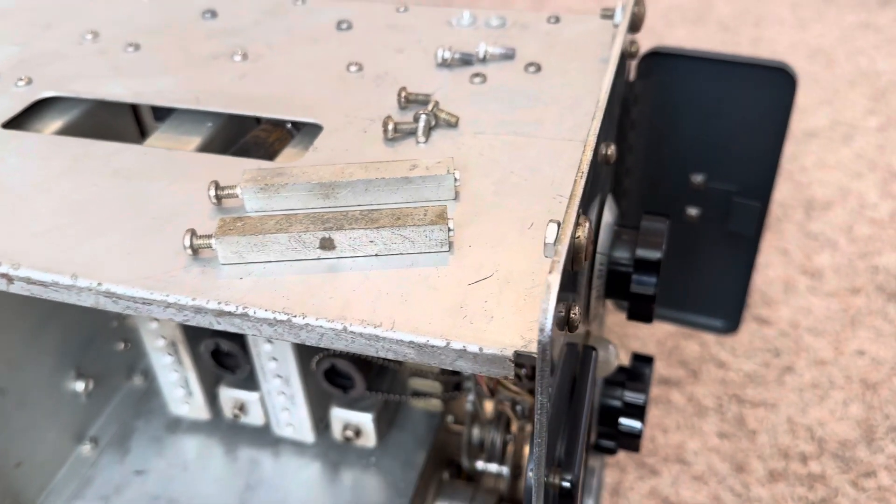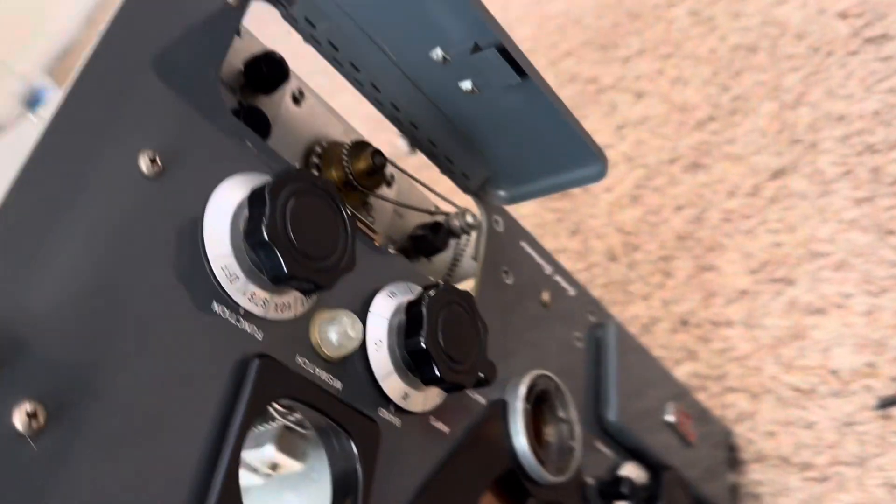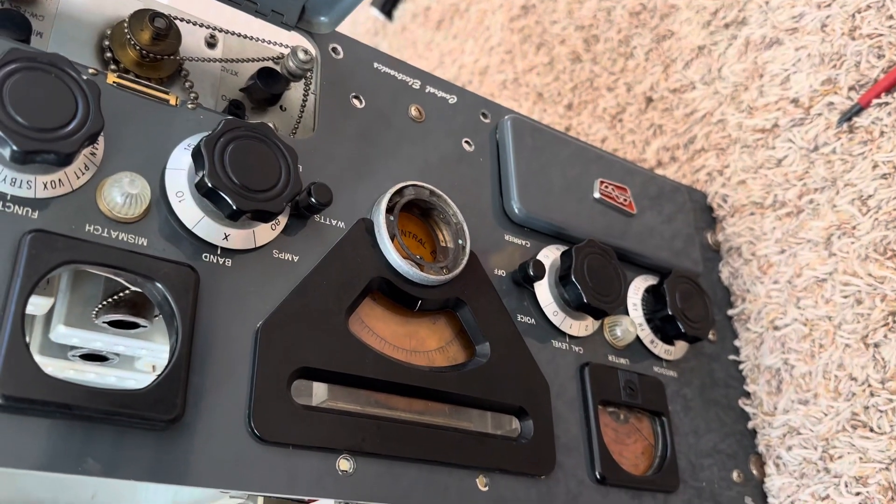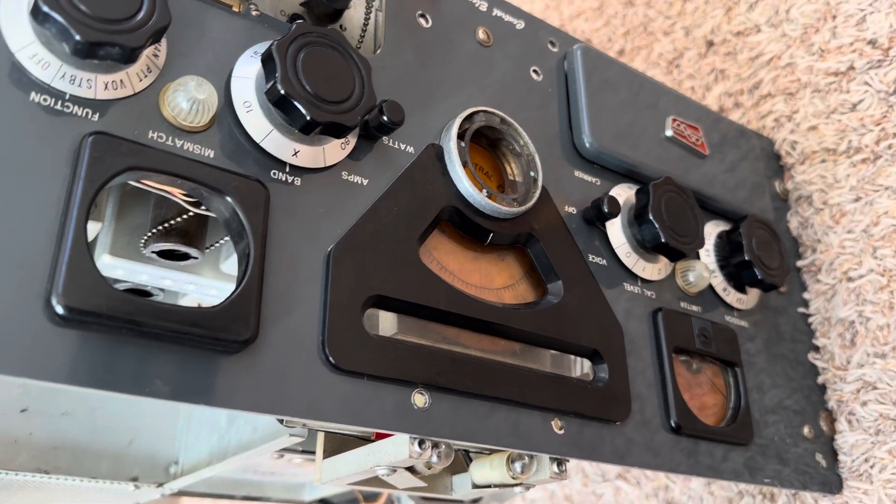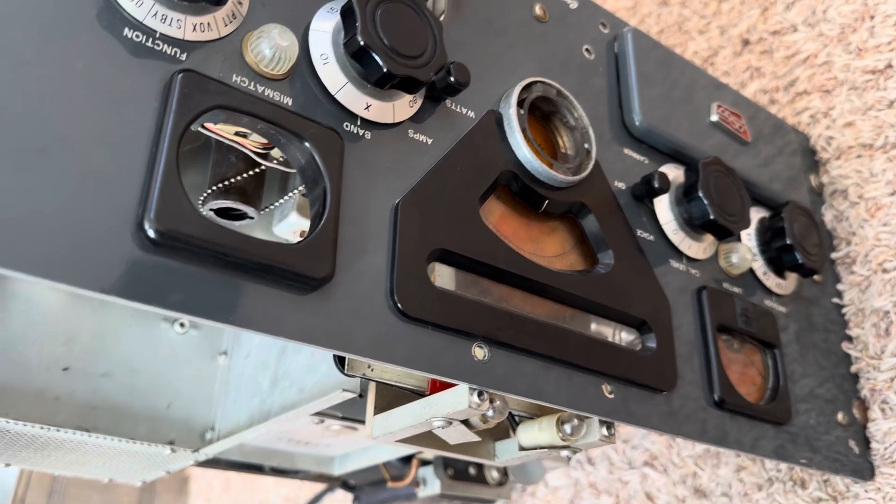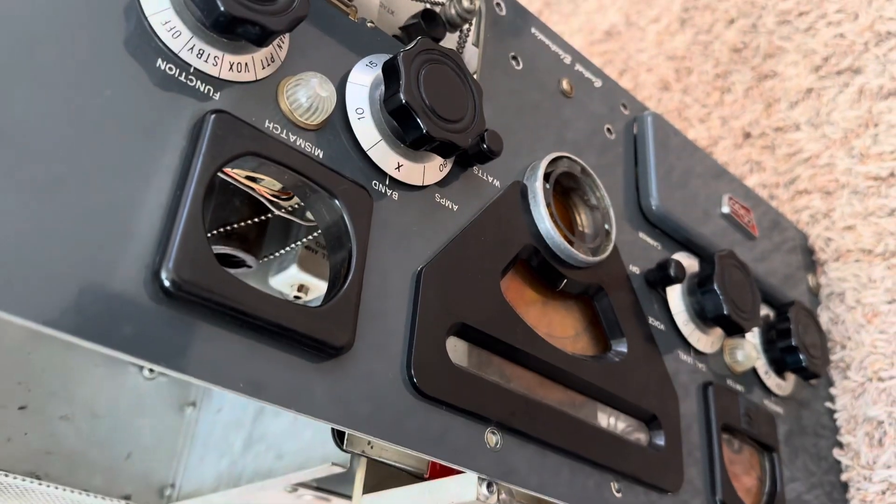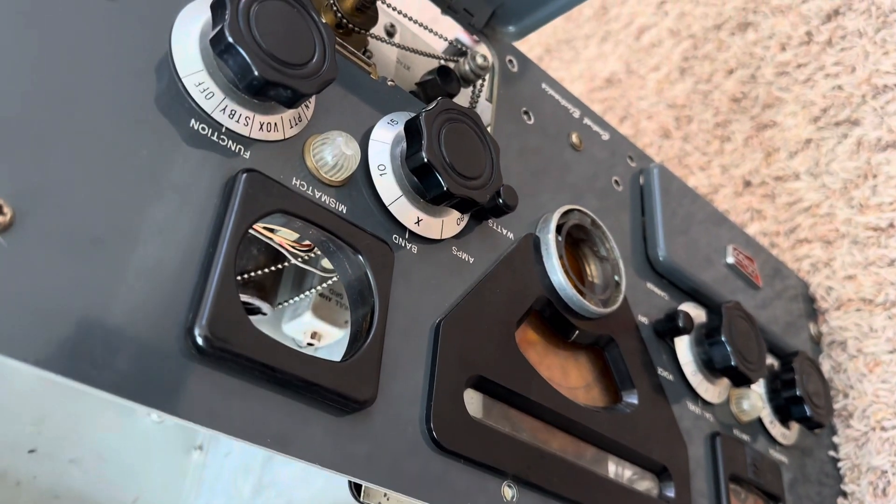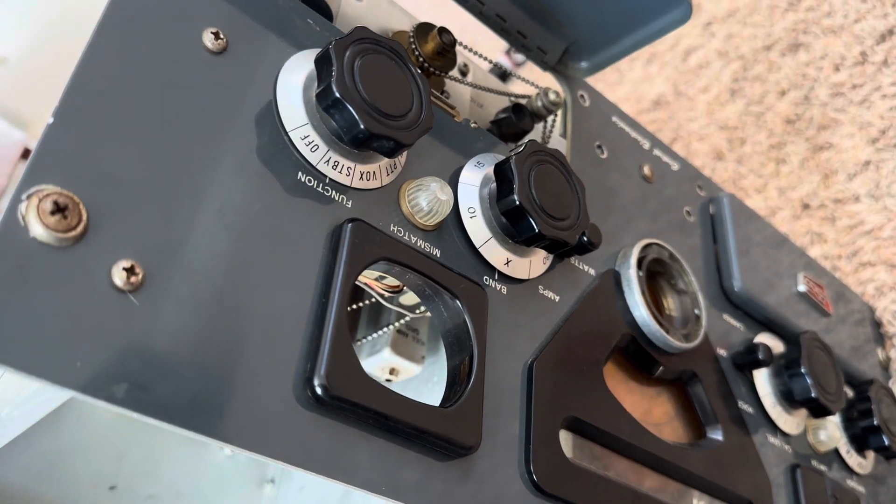Okay, hello friends and followers. This is the Central Electronics 100V transmitter, and my objective now is to get the VFO out of this unit. The VFO is coming out because it was damaged in shipping.